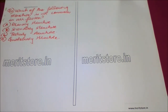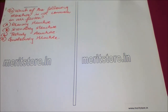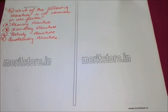The answer is Option B: maltose. Our next question is: which of the following structures is not common in all proteins? Option A: the primary structure, Option B: secondary structure, Option C: tertiary structure, and Option D: quaternary structure. It is known that a protein is composed of four types of structures: primary, secondary, tertiary, and quaternary.